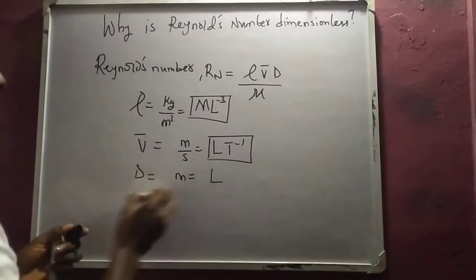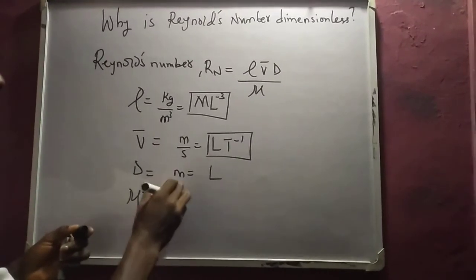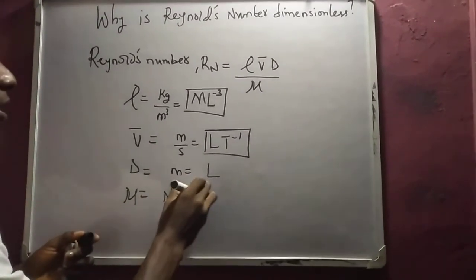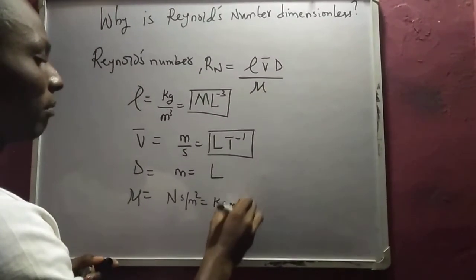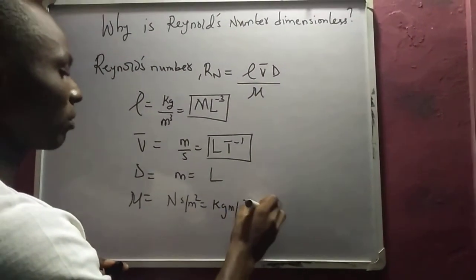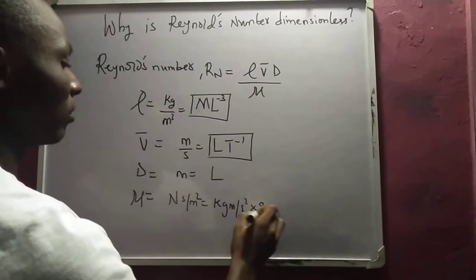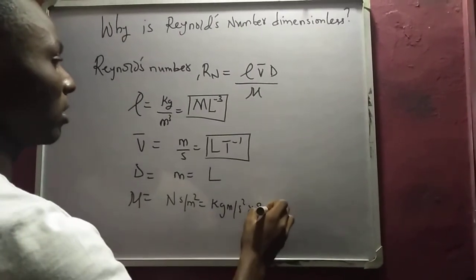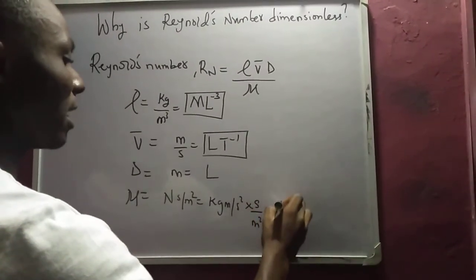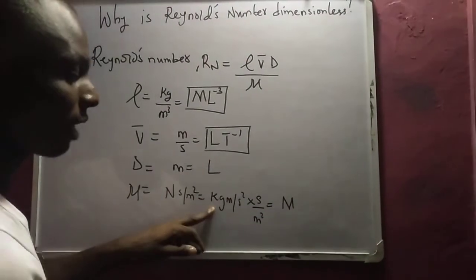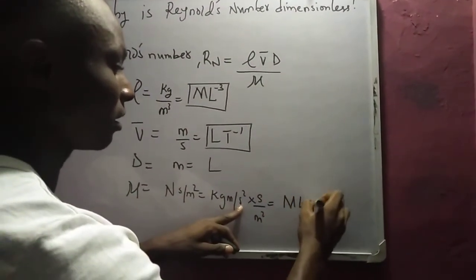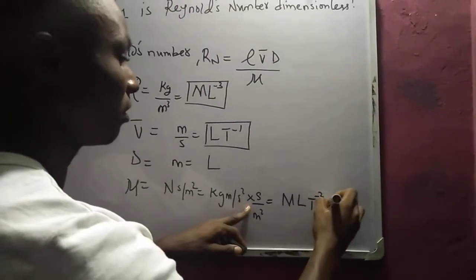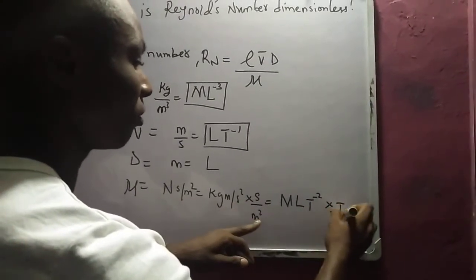So for μ (mu), which is Newton second per meter squared, this will be kilogram meter per second squared times second, all over meter squared. So this will give us mass, length, time multiplied by time again, all over length squared.